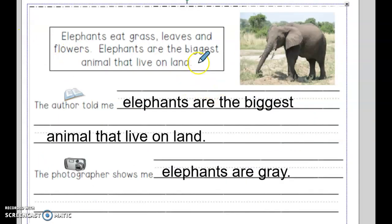And I read about elephants and looked at a photograph of an elephant. So here the author told me, going back to what the author said, elephants eat grass, leaves, and flowers. Elephants are the biggest animal that live on land. So I wrote, the author told me, elephants are the biggest animal that live on land.